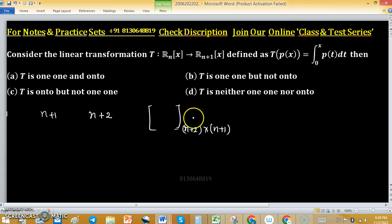If we need to check that this linear transformation is one-to-one or onto, we need to check the nullity or rank. For nullity, consider p(x) belongs to null(T). If this belongs to null(T), then according to the definition of the null space, T(p(x)) equals the integral from 0 to x of p(t)dt, and we can apply Leibniz rule of integration.